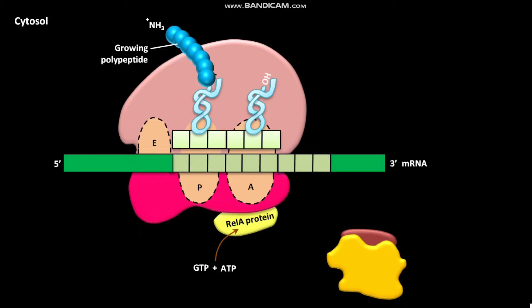The REL A protein then catalyzes a biochemical reaction in which GTP and ATP react with each other to form PPPGPP and AMP. In presence of a phosphohydrolase then the PPPGPP is converted into PPGPP or guanosine tetraphosphate.